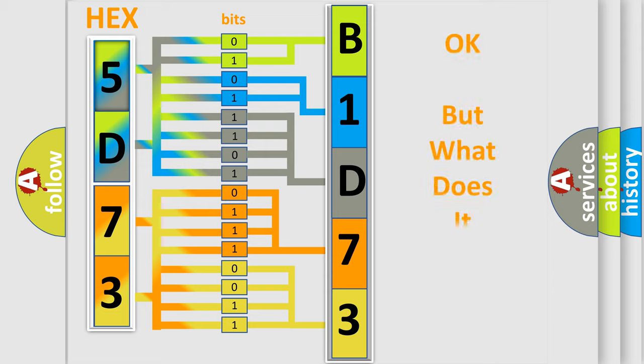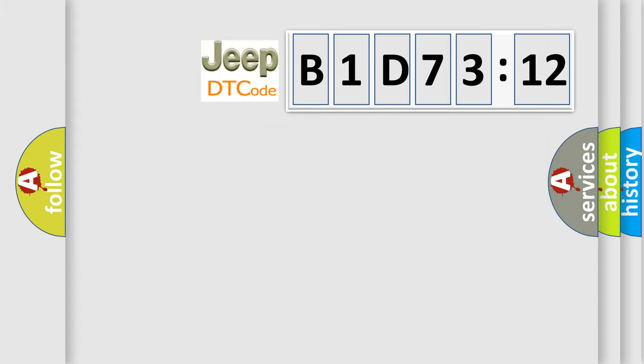We now know in what way the diagnostic tool translates the received information into a more comprehensible format. The number itself does not make sense to us if we cannot assign information about what it actually expresses. So, what does the diagnostic trouble code B1D7312 interpret specifically for Jeep car manufacturers?